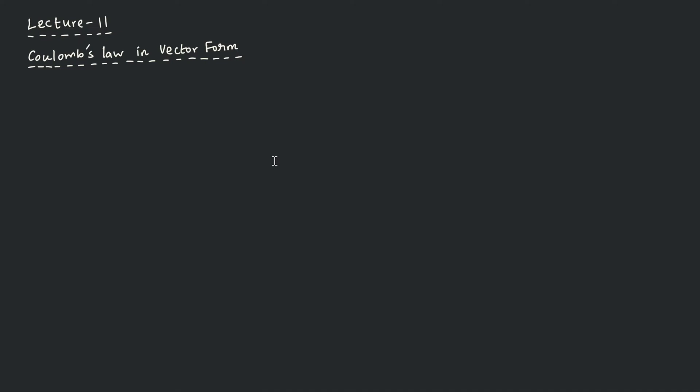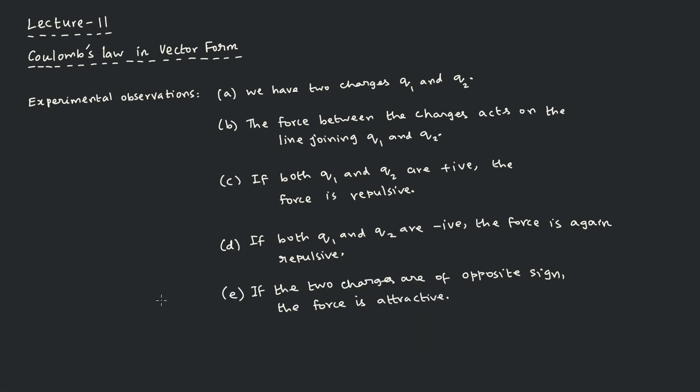Hello everyone. Now I will explain how the experimental observations enable us to write Coulomb's law in the vector form. The experimental observations we would like to transform or convert into a suitable mathematical expression.